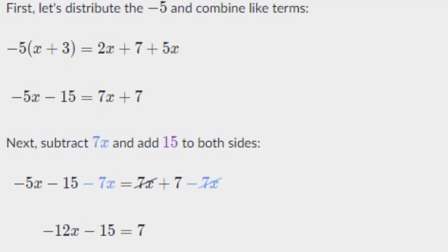First we need to open the bracket using minus 5. Therefore minus 5 times X is minus 5X, and minus 5 times plus 3 is minus 15, giving minus 5X minus 15 equals 7X plus 7. Now let's subtract 7X from both sides: minus 5X minus 15 minus 7X equals 7X plus 7 minus 7X. The 7X on the right hand side cancels out. Minus 5X and minus 7X are like terms, so they combine to give minus 12X minus 15 equals 7.